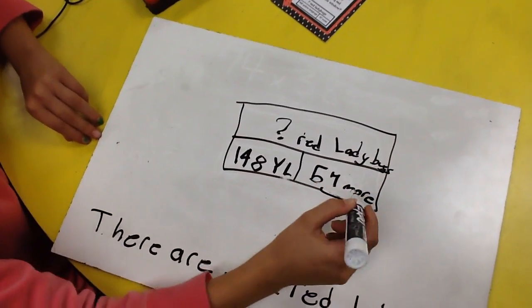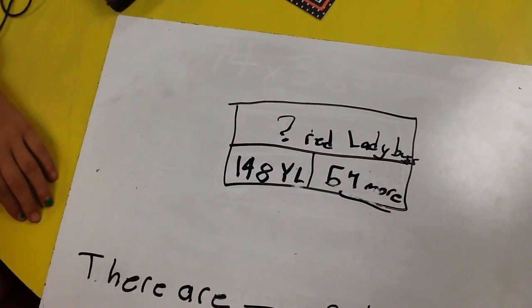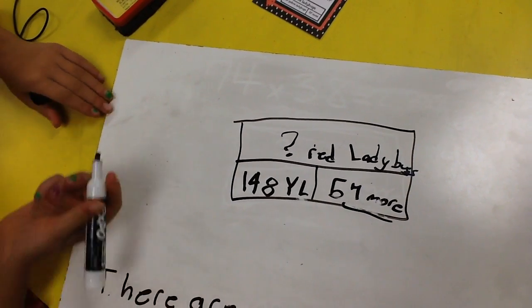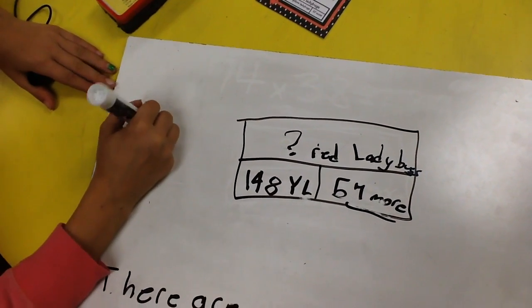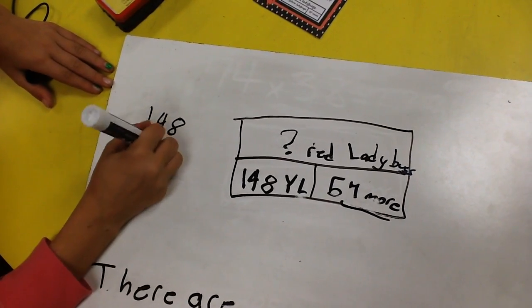So we have to find out what the bigger number is. We know that 148 and we need to add 57 more. So we're going to write 148 plus 57.